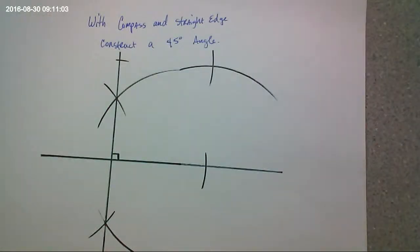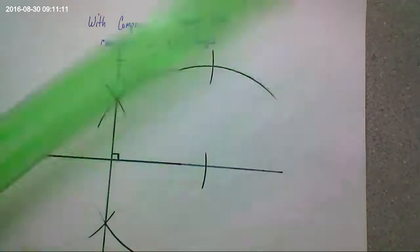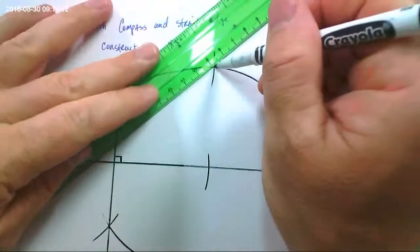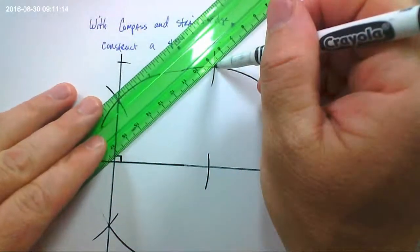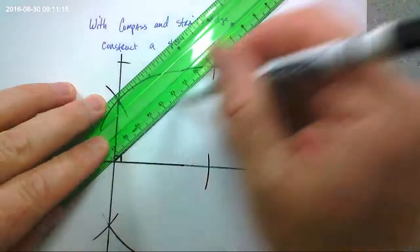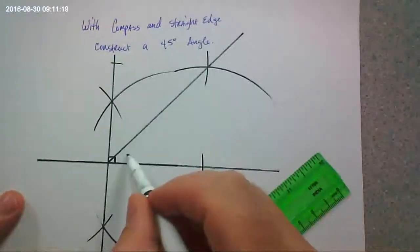And then I just have to connect the vertex through that intersection point. And I've cut the 90 degree angle in half. So I have to go from here through the vertex. That will be 45 degrees.